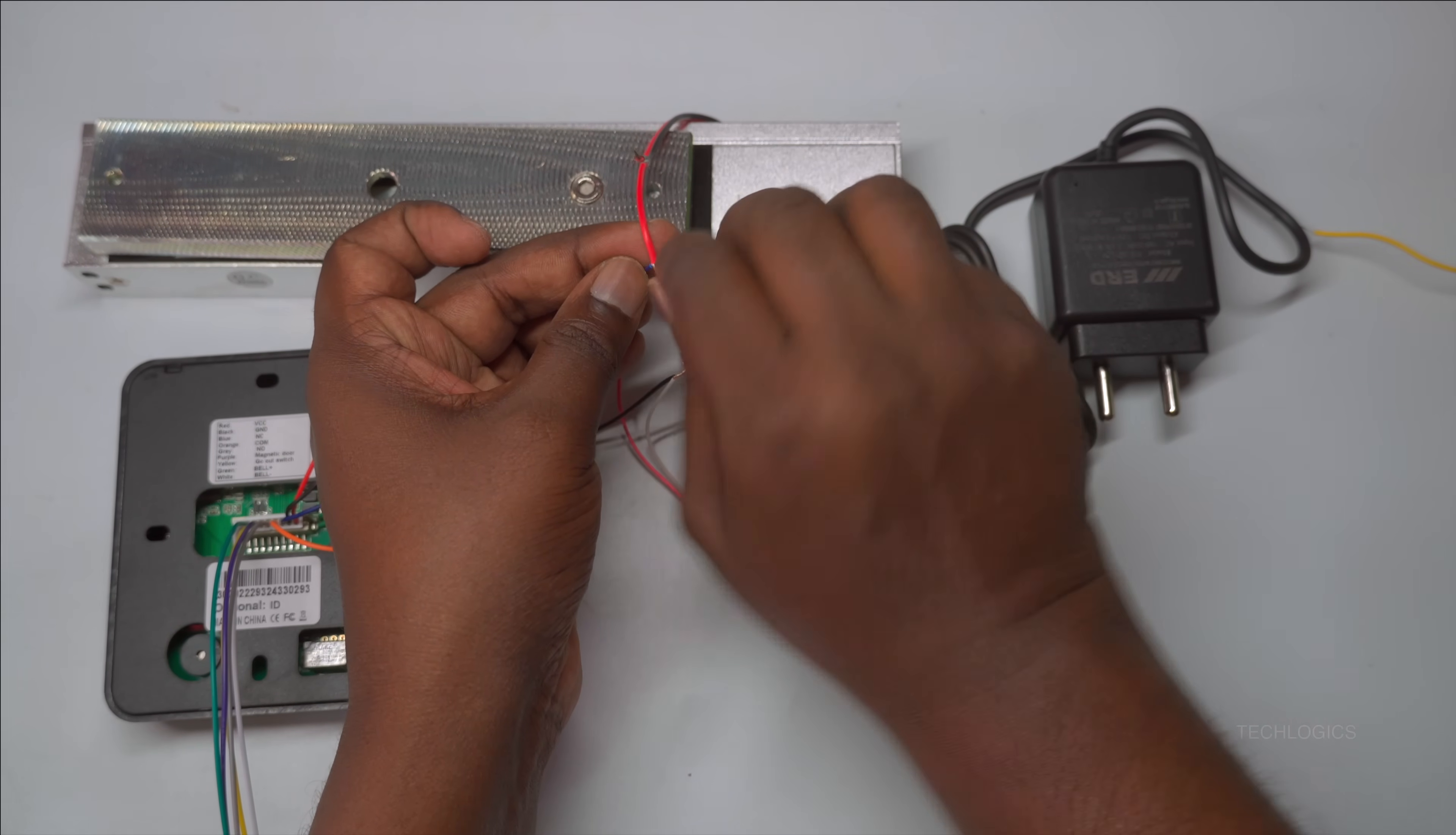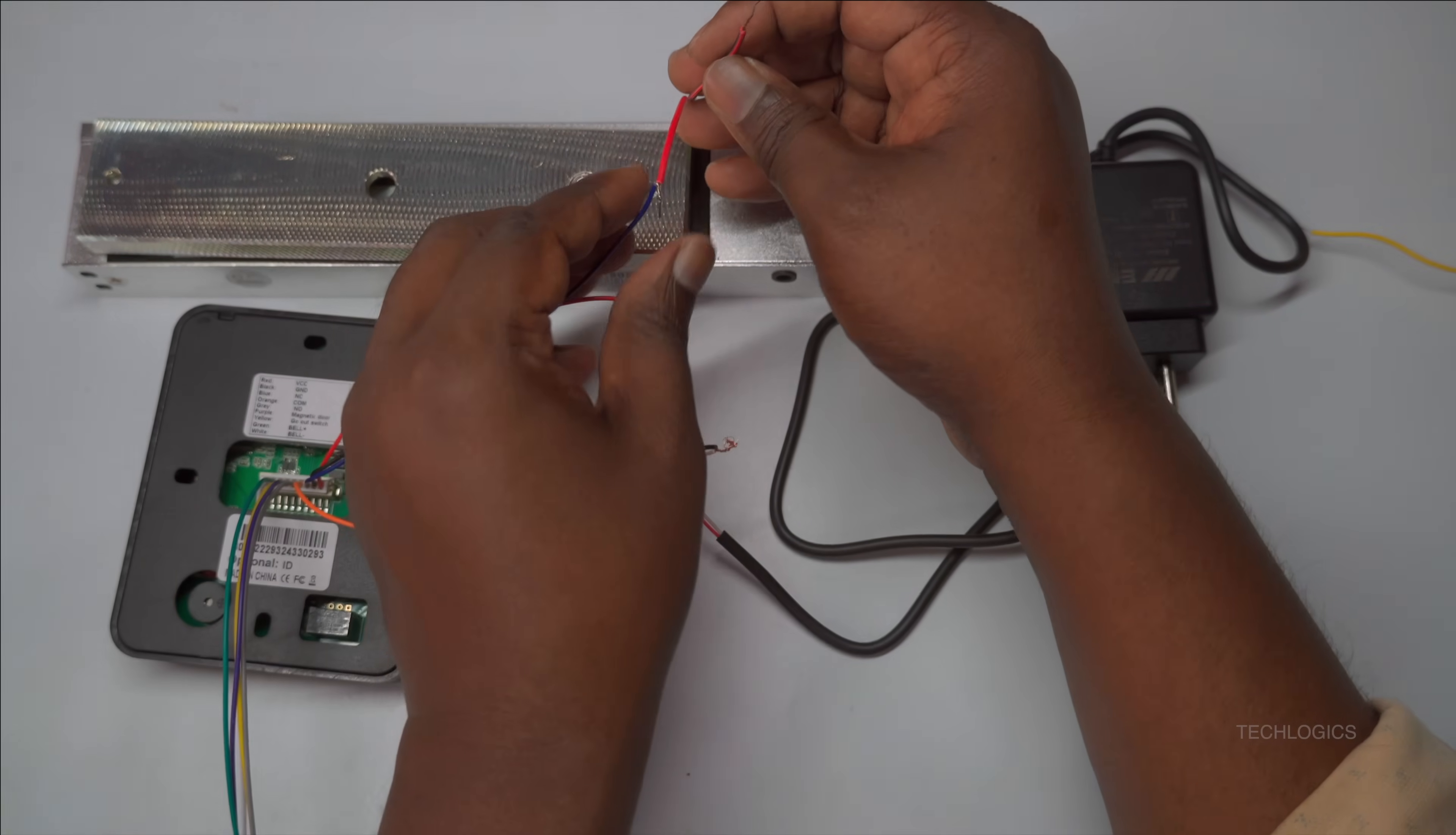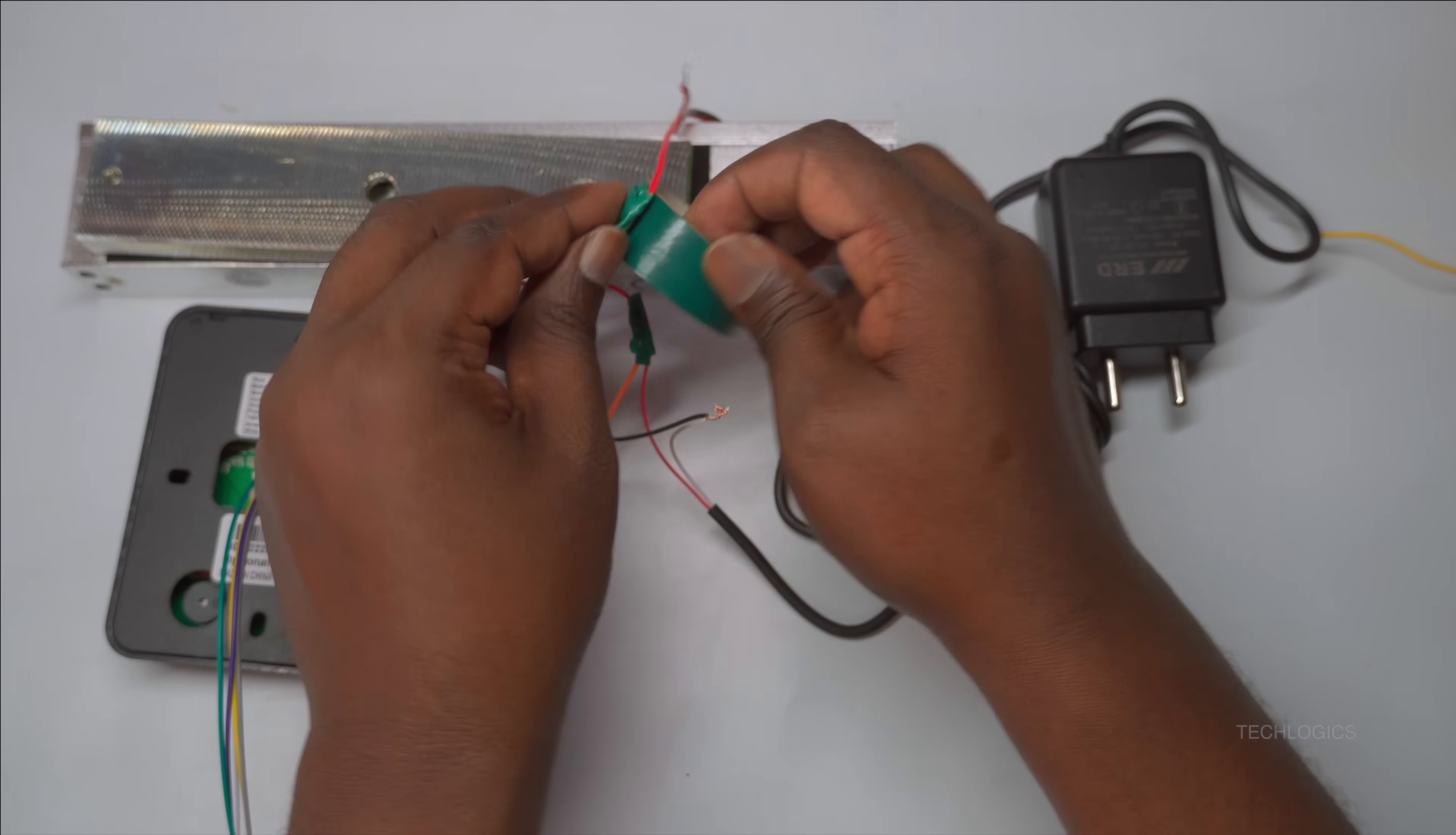Avoid using the NO (normally open) terminal for this setup, as it is not suitable for controlling the electromagnetic lock in this configuration. The NC connection ensures the system functions reliably by keeping the lock secure until an authorized access signal is received.